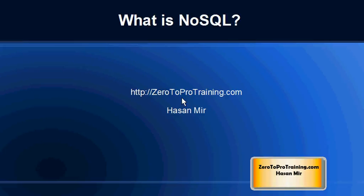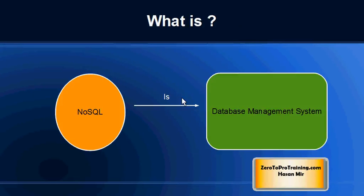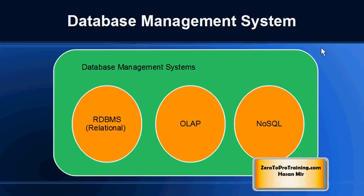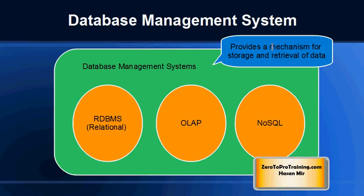In this session we will talk about what is NoSQL database. This is Hassan Mir from 02Protraining.com. NoSQL is a database management system. There are different kinds of database management systems. Relational database management system is the most common, called RDBMS. Then we have Online Analytical Processing Systems, referred to as Data Warehouses. And then we have NoSQL database management systems. In general, a database management system provides a mechanism for storing and retrieval of data.